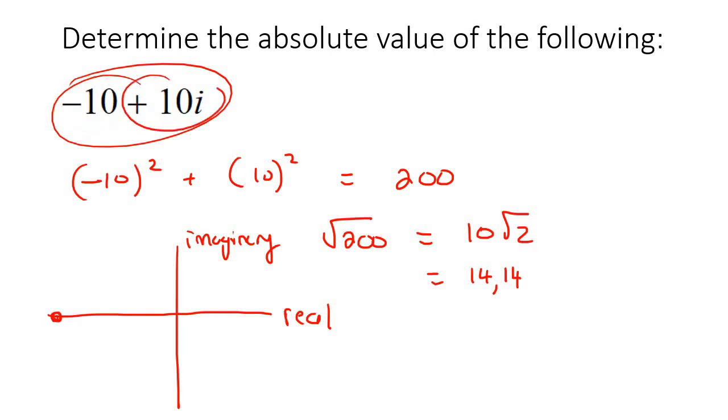And then 10 up, that would be somewhere over there. So what we're actually just calculating is this distance over here. Because we know that this length is 10 and this length is 10. So we're just using Pythagoras. That's all we're really doing here.